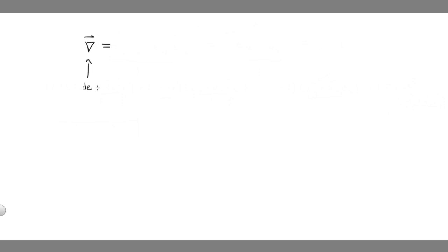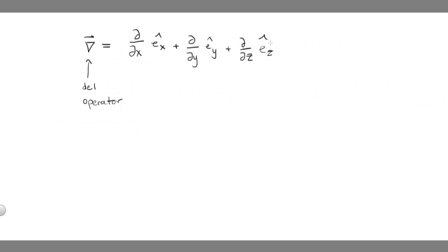The del operator is a vector in which each component is the partial derivative of some unspecified function with respect to the direction of that unit vector — so partial d/dx e x-hat, plus partial d/dy e y-hat, plus partial d/dz e z-hat. We can use this in a few key ways. We'll review some operations that use this del operator, including the gradient, the divergence, and briefly the curl.